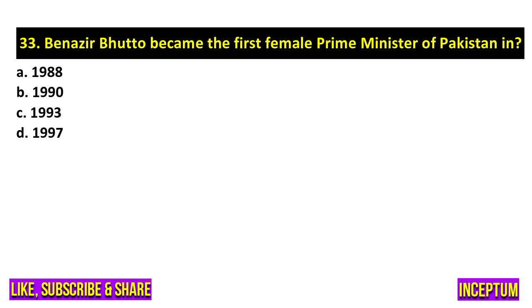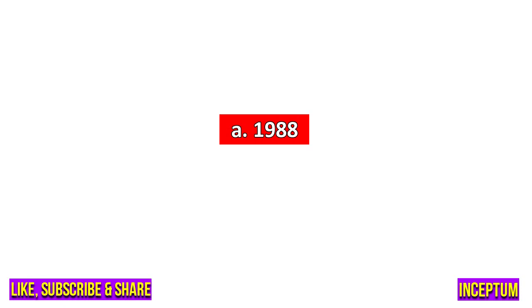Question number 33. Benazir Bhutto became the first female Prime Minister of Pakistan in which year? In the options we have 1988, 1990, 1993, 1997. And the right answer of this question is option A, 1988.